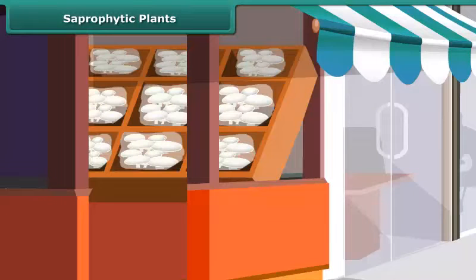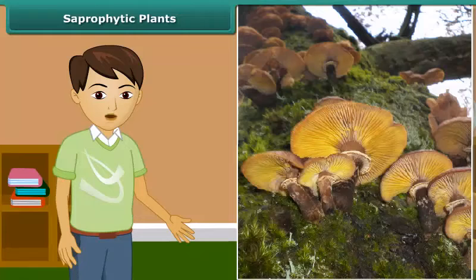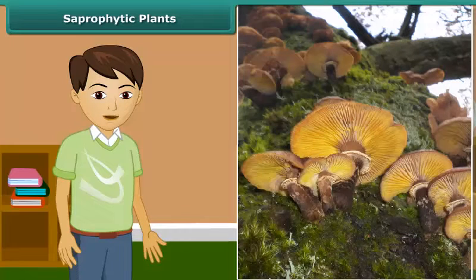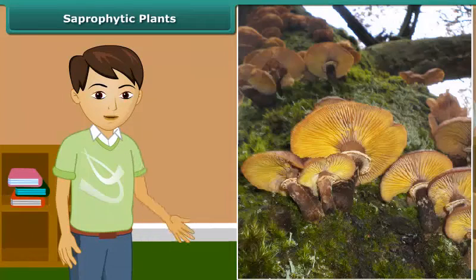When you go to a vegetable shop, you might have seen packets of mushrooms sold in it. Besides that, sometimes you may have also seen fluffy umbrella-like patches growing on rotting wood during the rainy season. But do you know what these organisms are and how they get their nutrition?